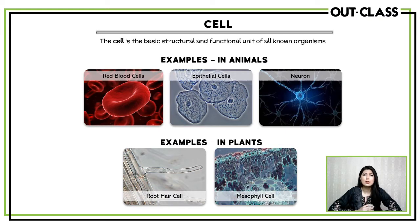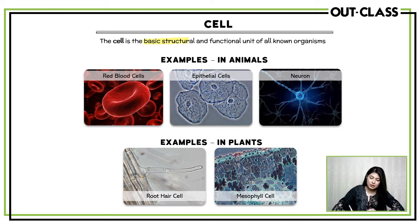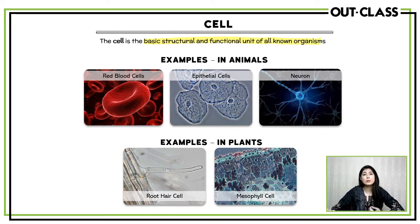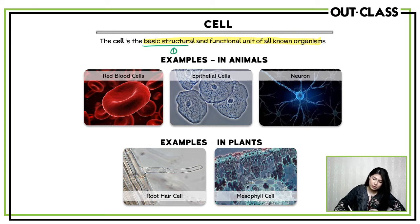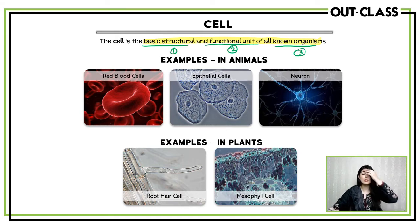Now what is a cell? The cell is the basic structure and functional unit of all known organisms. When you tell this definition, you divide it into three parts: number one, it's the basic structure; number two, it's the functional unit; and number three, of all known organisms. If you remember these three things, you will never forget what a cell is.